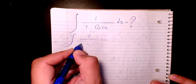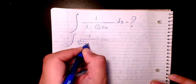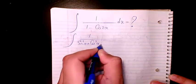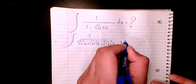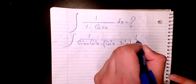So instead of 1 I can write sine squared x plus cosine squared x minus cosine 2x is cosine squared x minus sine squared x dx.